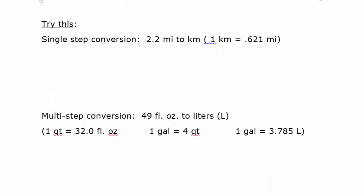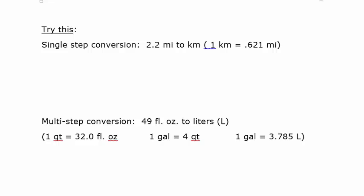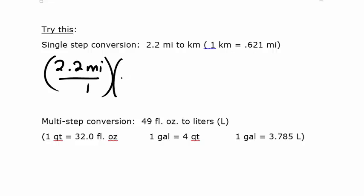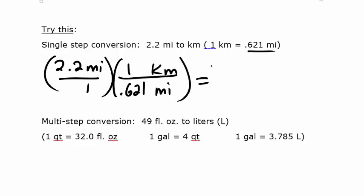Here are a couple for you to try — stop the video, work the problems, then check your answers. The first is a single-step conversion: 2.2 miles over 1, converting to kilometers. Using the given conversion, miles go on the bottom at 0.621 miles and kilometers go on top. When you do the math, you get 3.5 kilometers.